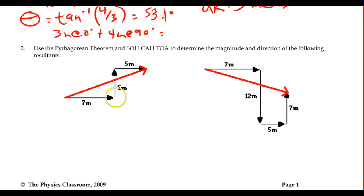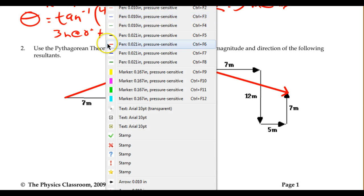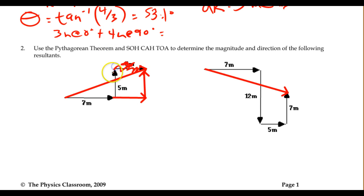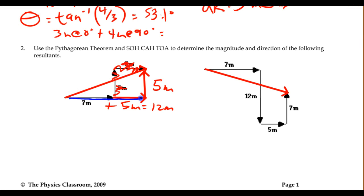I'm going to move vectors around. I'll take the 5-meter vector pointing up and move it down here, and take the 5-meter vector pointing sideways and move it over. Since I've moved them, I now have these two repositioned vectors lined up head to tail. So 7 plus 5 means this side of the overall larger triangle equals 12. This gives me a large triangle combining the blue and black vectors to produce the red resultant.